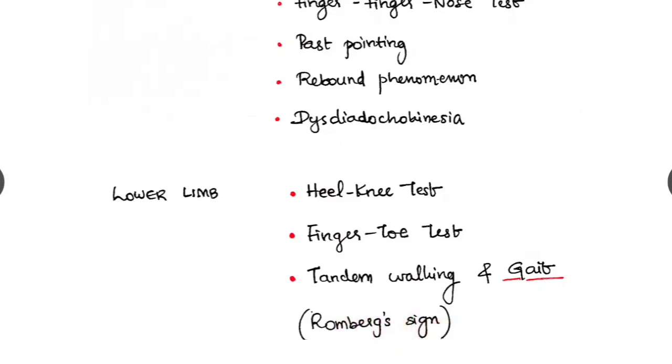Some people will do Romberg's sign for checking the cerebellar lesions, but actually Romberg's sign is seen in posterior column lesions which is a part of sensory system.